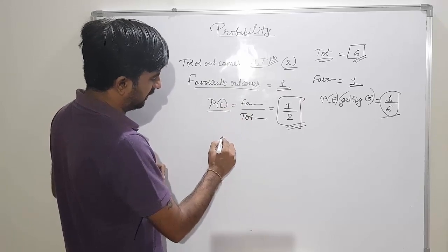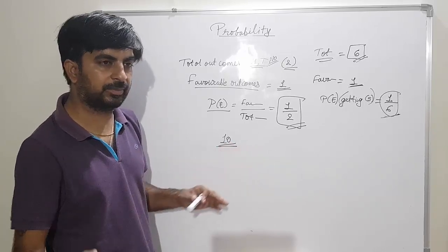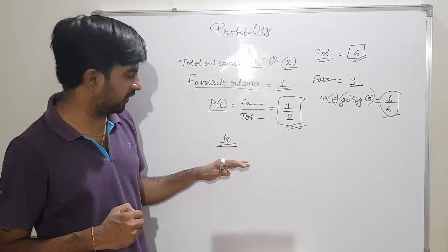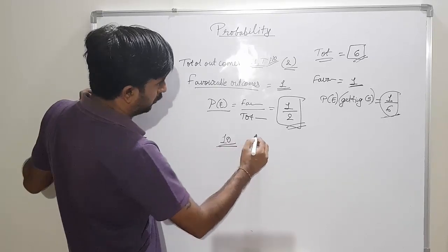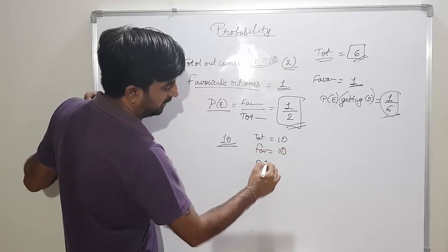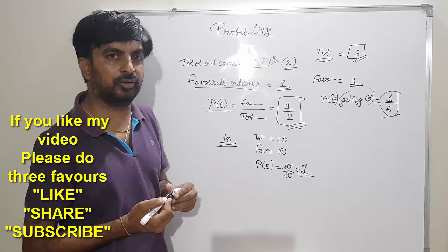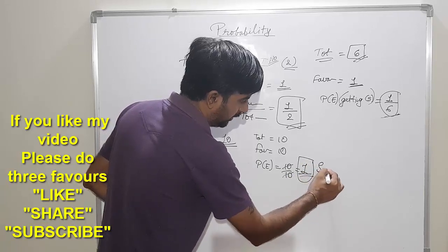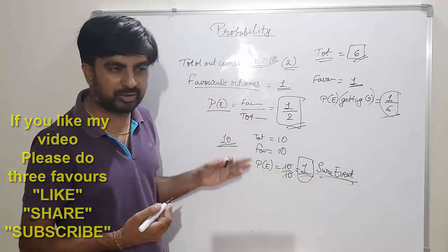If you are having ten red color candies in a box, and I tell you to find out the probability of getting a red candy from that box without looking inside — all candies are of red color. Total outcomes is ten, favorable outcomes is also ten. So probability of getting red candy is ten by ten, which equals one. So here you will compulsorily get one red candy. This type of event, when the answer is one, is called a sure event.